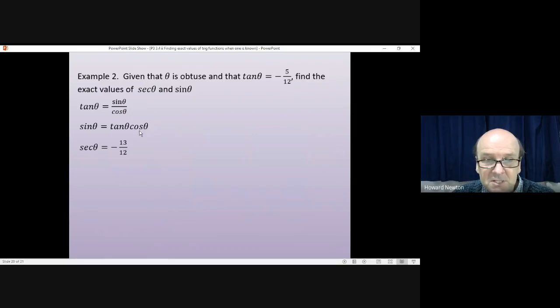And coming to the cos theta bit, sec theta we just worked out in the previous question. That's minus 13 over 12. Well, cos theta is 1 divided by that. So, cos theta must equal minus 12 divided by 13. Same fraction, but upside down.